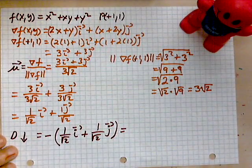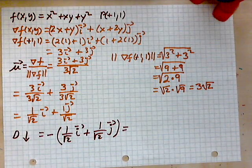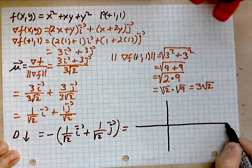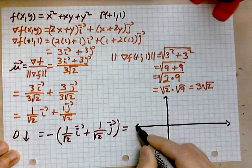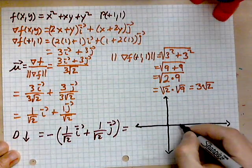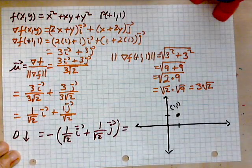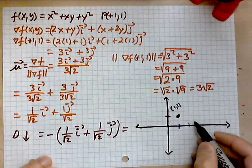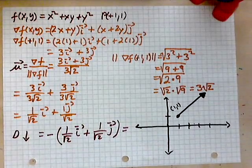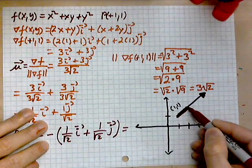For those who are visual, here is a graph for extra insight. In the xy coordinate plane, we mark the point (1,1). The gradient at that point was found to be 3i + 3j, which we can draw as a vector. By dividing the gradient by its magnitude, we made a unit vector in the same direction — you can imagine a vector parallel to it.